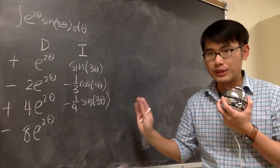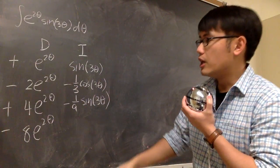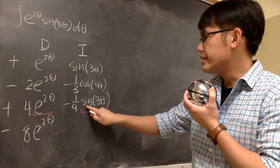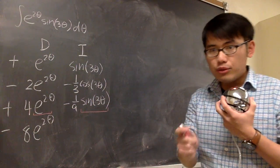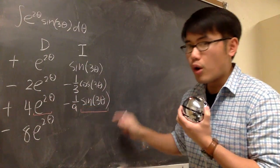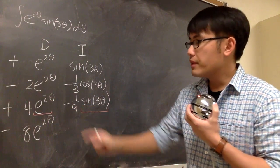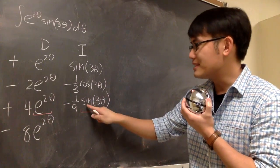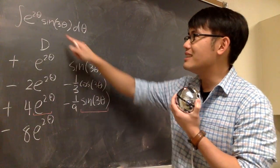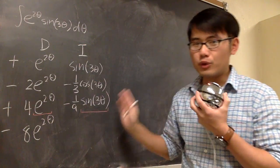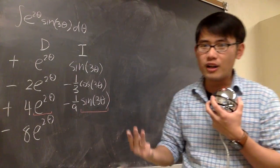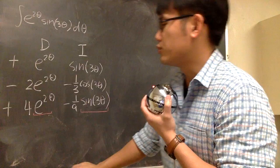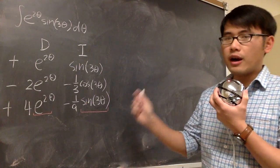At this stage, we stop. The reason is: look at this row — the D column has e to the 2 zeta and the I column has sine of 3 zeta. The product of this row represents an integral, and e to the 2 zeta times sine of 3 zeta is exactly the same as what we started with. When you see the function repeat, you stop. This is the third stopping rule in the DI method. So the last row wasn't needed at all — we are good to go.